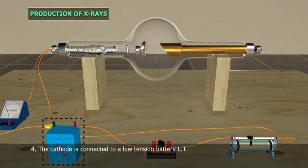The cathode is connected to a low-tension battery L-T.